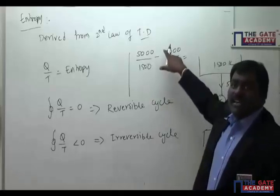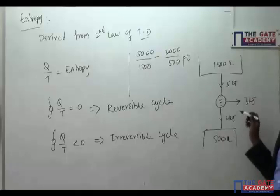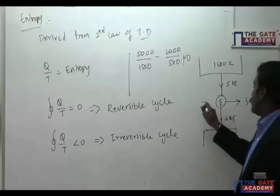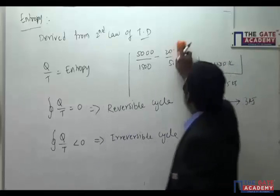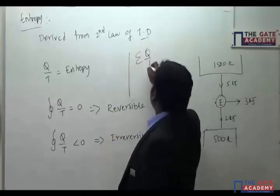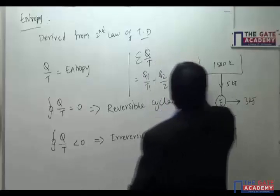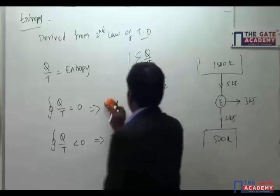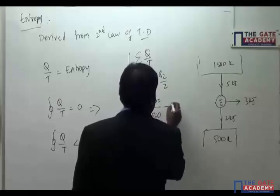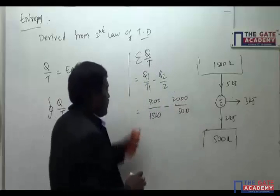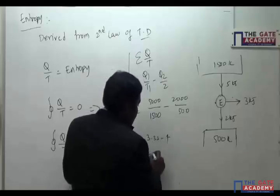Here Q1/T1 minus Q2/T2 — the minus sign is because Q2 is heat rejection. The result is 5000/1500 minus 2000/500, which gives 3.33 minus 4, equal to minus 0.67. Since it is not zero, it is not a reversible process — it is irreversible.